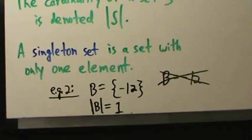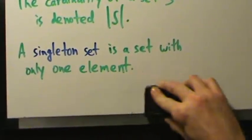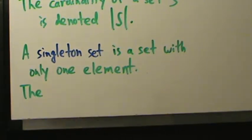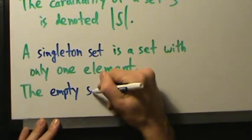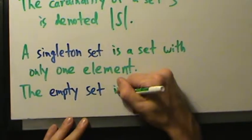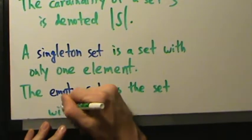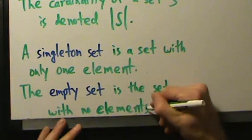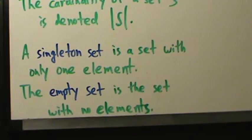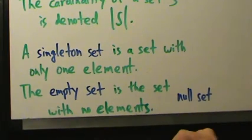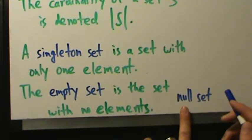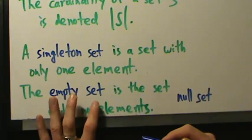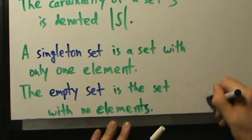Similarly, there's a notion of the empty set — we say the empty set because we really only talk about one such set. The empty set is the set with no elements. Some people like to say null set, but I don't really like that term because it can mean something else in a later math class. Empty set is more common in this context. So empty set and null set mean the same thing, but I prefer to use empty set.